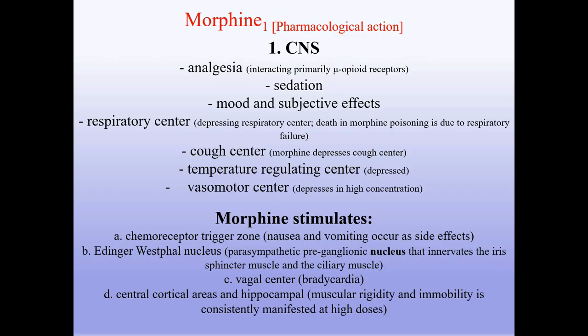Morphine pharmacological actions on the central nervous system: analgesia, interacting primarily through mu opioid receptors; sedation; mood and subjective effects. Morphine depresses the respiratory center — death in morphine poisoning is due to respiratory failure. It decreases the cough center, depresses the temperature-regulating center, and depresses the vasomotor center at high concentrations. Morphine stimulates the chemoreceptor trigger zone (nausea and vomiting as side effects), the Edinger-Westphal nucleus (parasympathetic preganglionic nucleus innervating the iris sphincter and ciliary muscle), and the vagal center (bradycardia). At high doses, muscular rigidity and immobility are manifested.